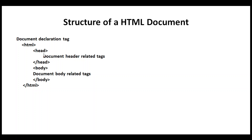The first is the header tag. The header tag contains document-related tags and information tags. The next is the body tag, which also contains document-related tags. We represent the content within the body. We denote the header with the header tag, and we close the header tag.